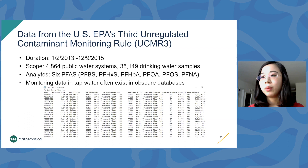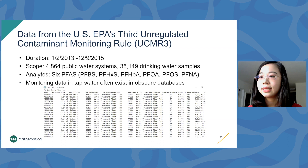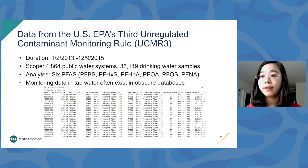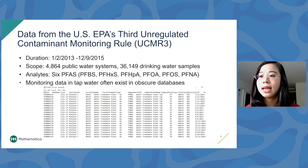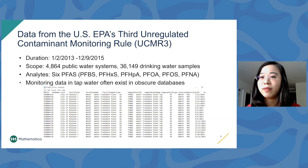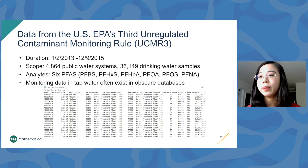Recall the Unregulated Contaminant Monitoring Rule, or UCMR, that I mentioned earlier. In 2013 to 2015, the third UCMR included six PFAS in the monitoring program, and more than 36,000 finished drinking water samples were collected from close to 5,000 drinking water treatment plants — finished drinking water that would be distributed to individual homes. The data is publicly available, but the format is plain text after plain text. If I asked you to find whether PFAS contamination had impacted your region, it's not easy to do. So how do we put this kind of data in the hands of the public?